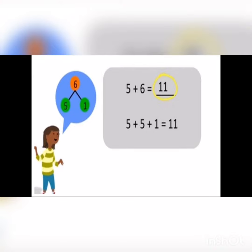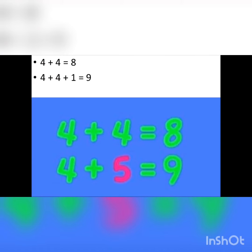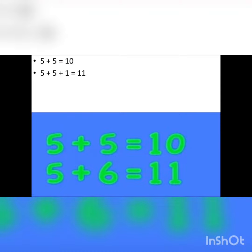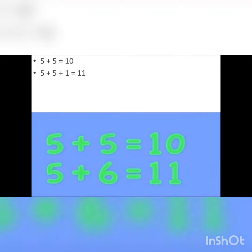plus six equals eleven. We will see how we got this number. Now, four plus five equals nine. We simply write the double, that is four plus four, and add one more to get the answer. Five plus six equals eleven. Again, we simply write the double, that is five plus five, and add one more.